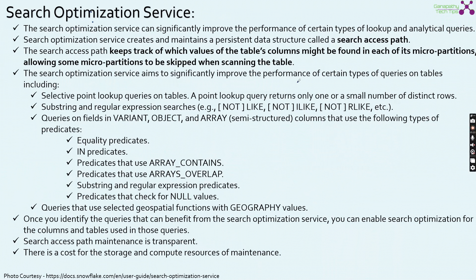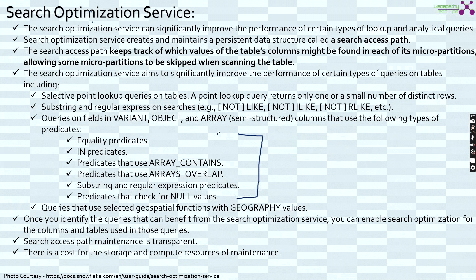The search optimization service significantly improves performance for selective point lookups on tables — such as WHERE clause with equality conditions — and point lookup queries returning only a small number of distinct rows. It also benefits substring and regular expression searches (LIKE, ILIKE, RLIKE), and works especially well on semi-structured data (VARIANT, OBJECT, ARRAY) with equality predicates, IN predicates, array constraints, array overlap, null-value checks, and geospatial functions with GEOGRAPHY values.